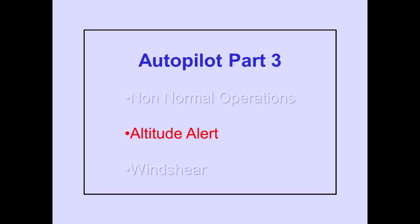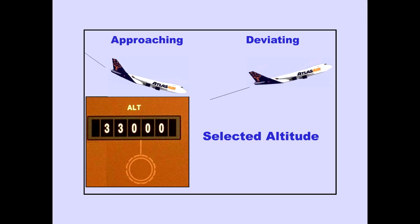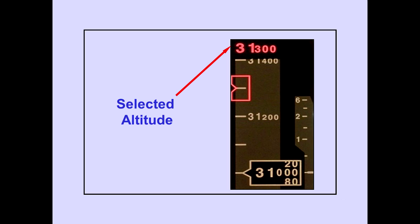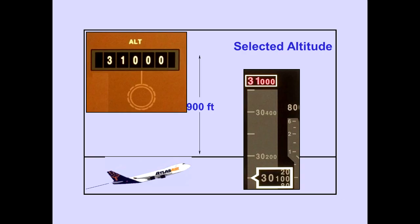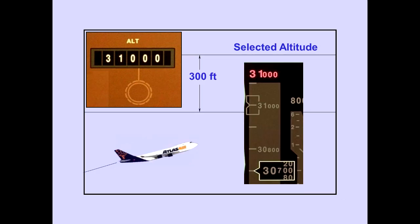Now let's discuss the altitude alert system. The altitude alert system references the altitude set in the mode control panel altitude window and provides alerting when approaching or deviating from a selected altitude. The selected altitude appears as a magenta display on the PFDs. Approaching 900 feet from your selected altitude, white boxes appear around the selected altitude and current altitude displays. Approaching 300 feet from your selected altitude, the white boxes disappear.